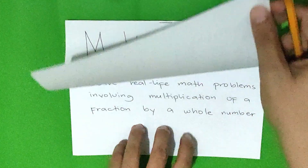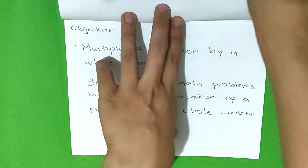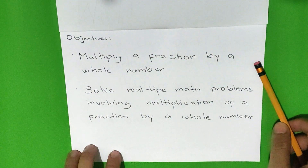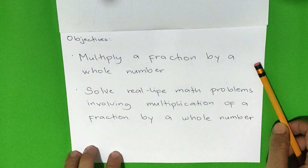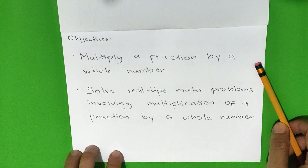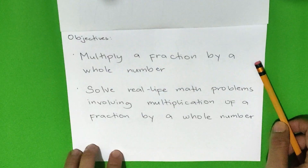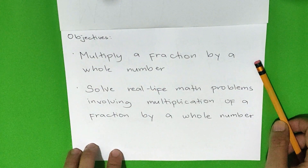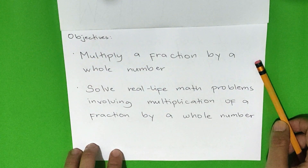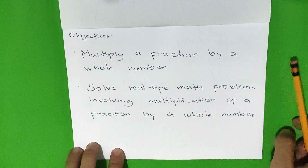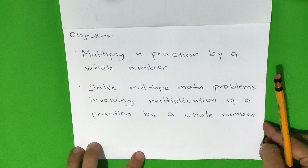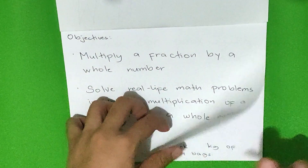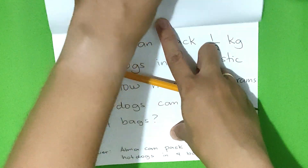Our lesson is about multiplying a fraction by a whole number. The objectives of this lesson are: multiply a fraction by a whole number, and solve real-life math problems involving multiplication of a fraction by a whole number. Here is an example.